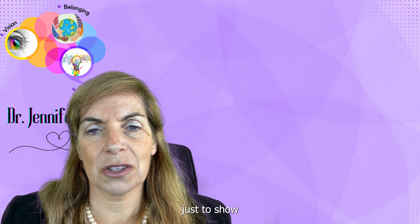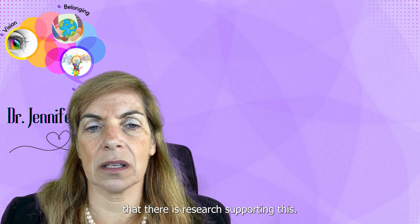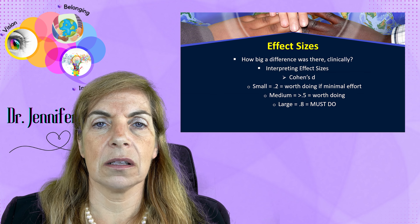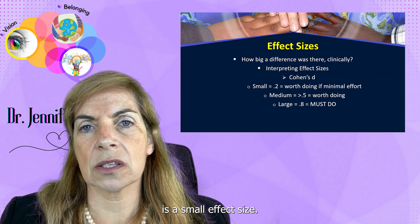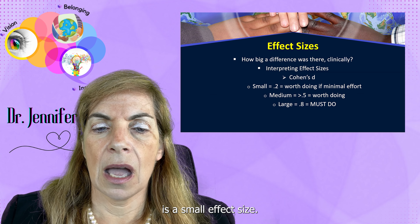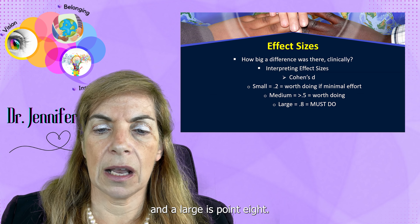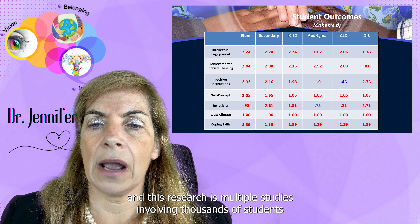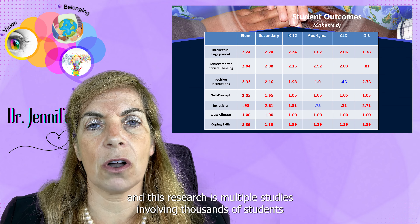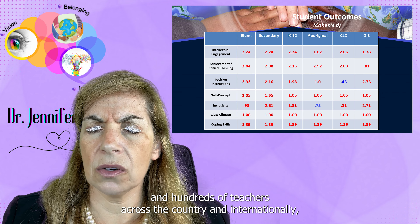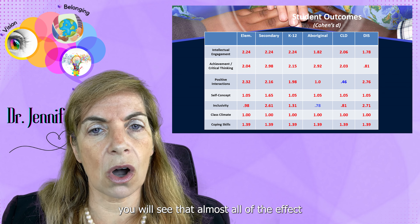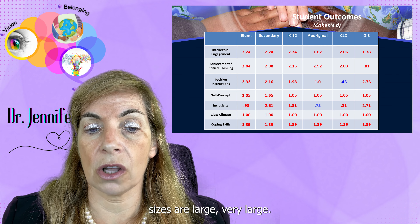Just briefly, to show that there is research supporting this: if you look at effect sizes, they are the easiest statistic to understand. An effect size of 0.2 is a small effect size, 0.5 is a medium effect size, and 0.8 is a large effect size. If you look at outcomes for research on the three-block model — and this research involves multiple studies with thousands of students and hundreds of teachers across the country and internationally — you will see that almost all of the effect sizes are large to very large.